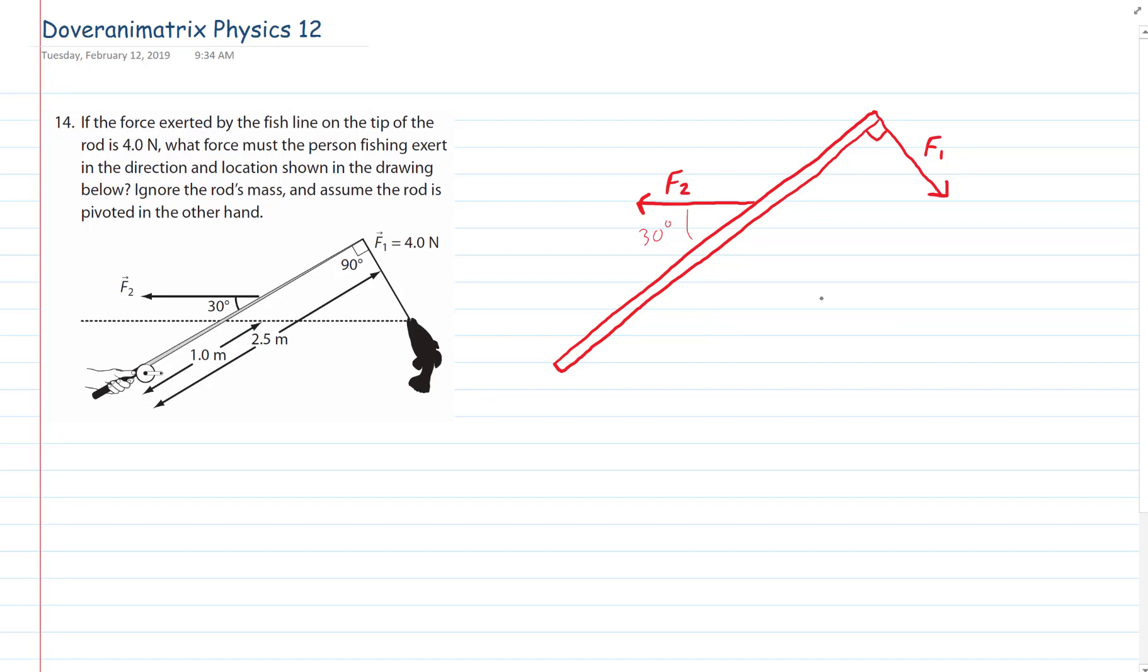And it's telling us to assume the rod is pivoted by the other hand. So they put the pivot point here. Why did they put the pivot point there? Because that hand will be producing another force. It could be pushing this way to balance this.